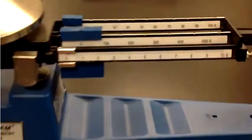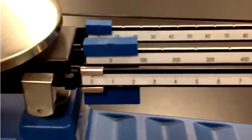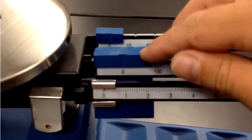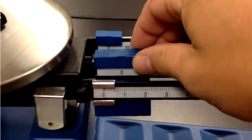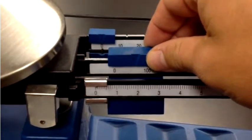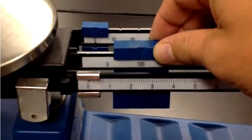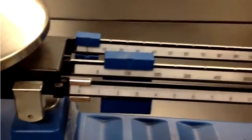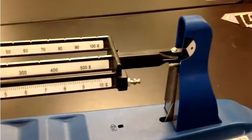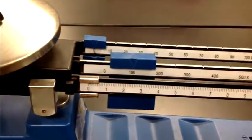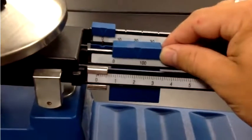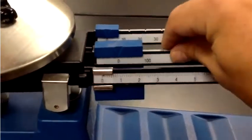Now to measure the mass we need to start with the largest slider. You move it over one time, it's going to click into place. Now he doesn't weigh or he doesn't have a mass of 100 grams. So we go back to zero.